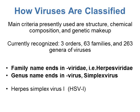We're going to look at how viruses are classified. The main criteria presently used is virus structure, chemical composition, and genetic makeup — so if it's a DNA or RNA virus. Currently, there are three orders, 63 families, and 263 genera of viruses.